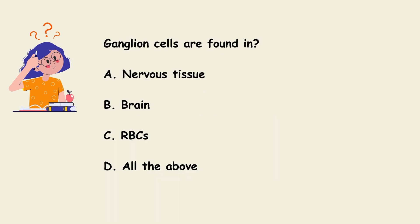Now the next question: ganglion cells are found in A. Nervous tissue. B. Brain. C. RBCs. D. All of the above. The answer for this question is D. Ganglion cells are found in all of the above — that is they are found in nervous tissues, brain and RBCs.